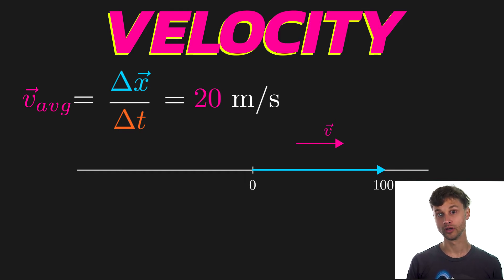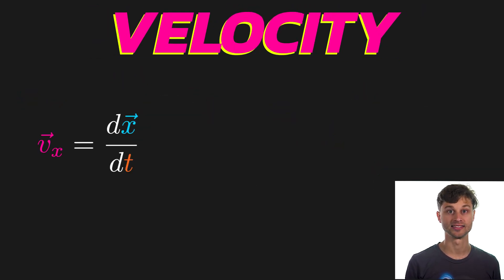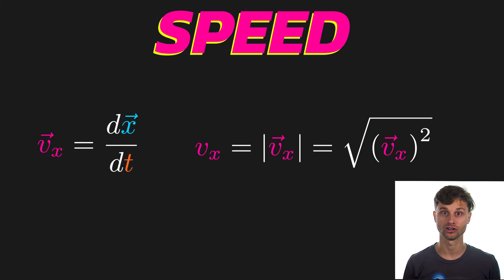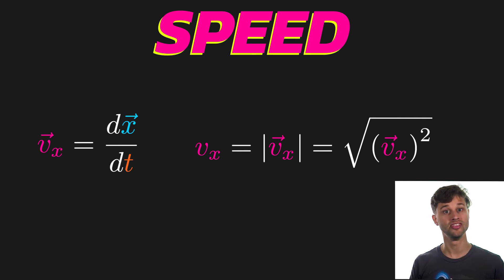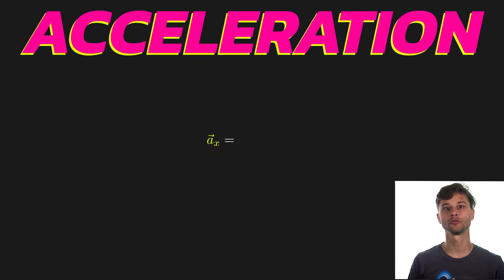To find the instantaneous velocity at any point along that motion, I would need to use derivatives. In general, velocity is equal to the first derivative of position. The related quantity to velocity is speed — speed is simply the magnitude of the velocity vector, equal to the square root of the velocity squared. This squaring and square-rooting converts the velocity vector into a scalar, and speed is a scalar, not a vector like velocity is.